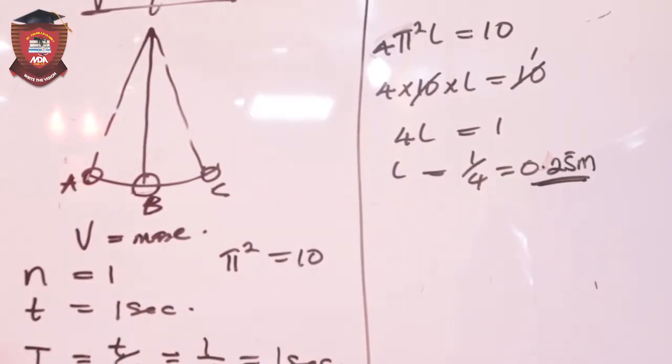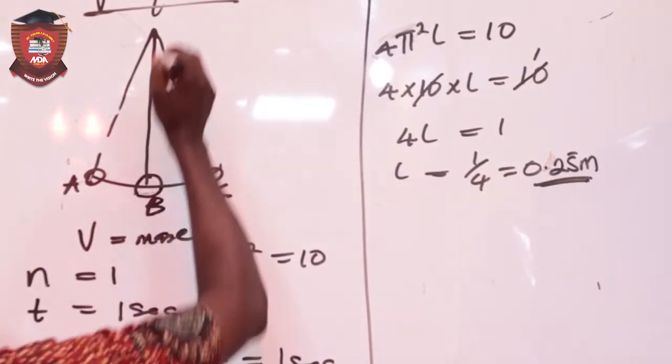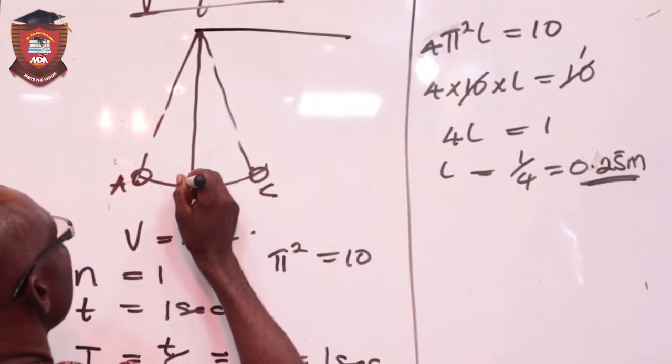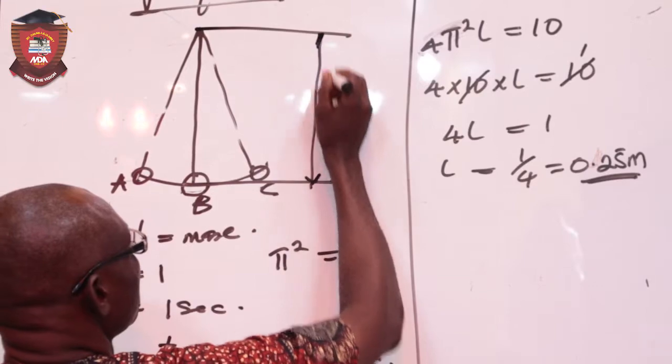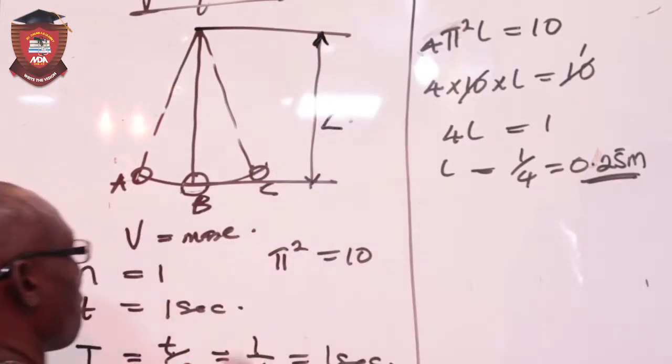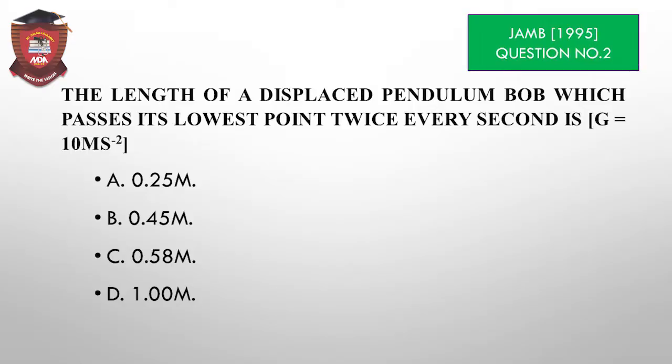That's the length of this particular pendulum from the point of displacement to the center of this. So this is L. And that's the solution to the question.